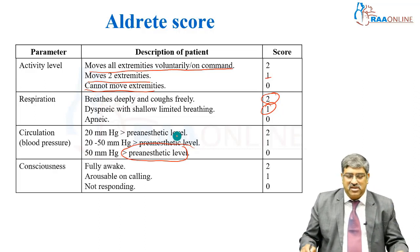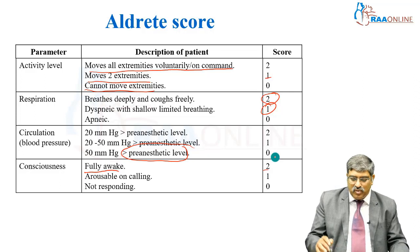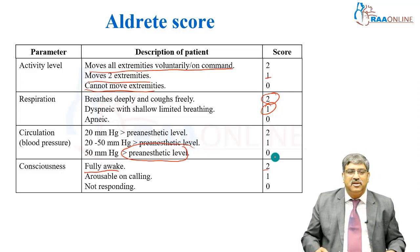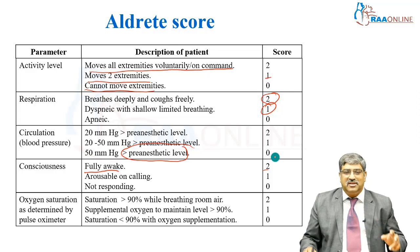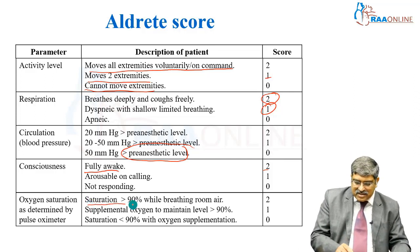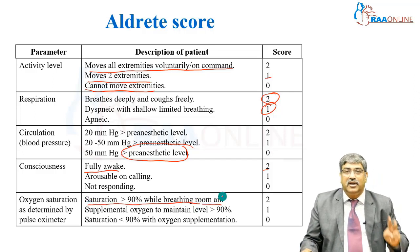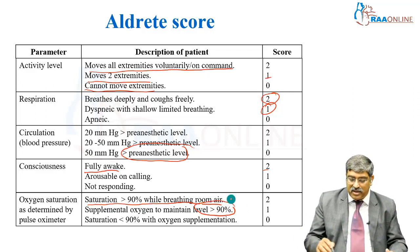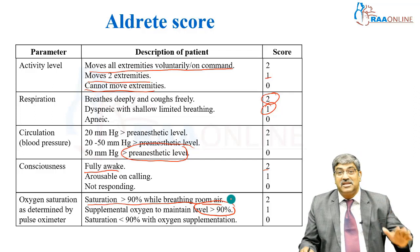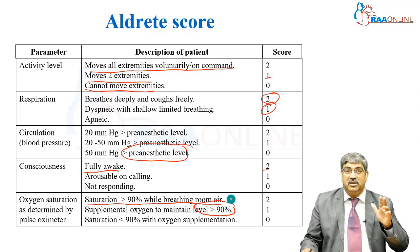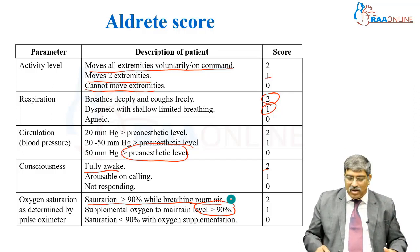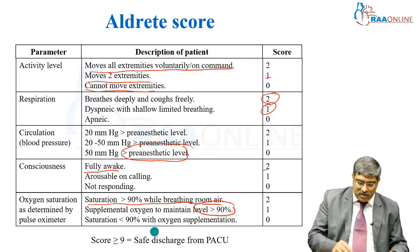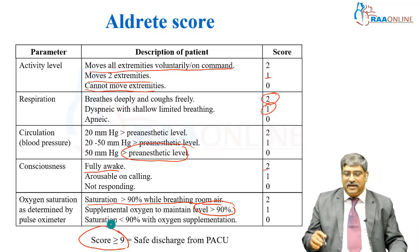For consciousness: fully awake scores 2, arousable on calling scores 1, and not responding scores 0. For oxygen saturation: greater than 90% breathing room air scores 2, requiring supplemental oxygen to maintain above 90% scores 1, and saturation less than 90% with supplemental oxygen scores 0. The patient can be discharged from the post-anesthetic care unit if the total score is greater than 9.